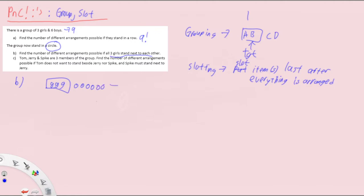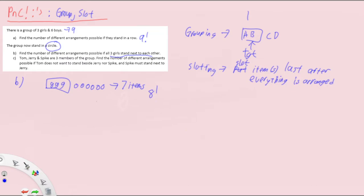So how many items do we have now? We have one group and six boys — seven items in total. We need to do this because if we tried eight factorial (since it's a circle with nine people, nine minus one gives eight factorial), we'd get cases where not all the girls are together — for example, girl one and girl two together but girl three separated and surrounded by boys. That's why we group them. So we arrange the seven items: six factorial because they're in a circle.